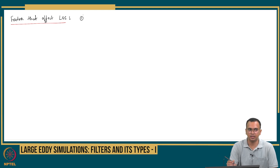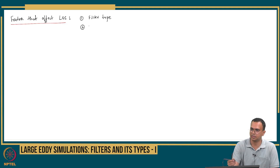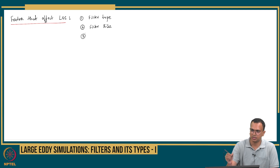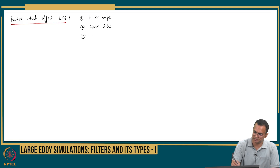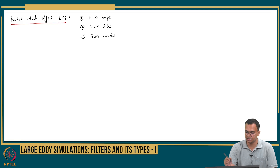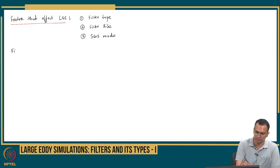The first factor is the filter type — the one you choose — and obviously the filter size, just like the grid size. The third factor is turbulence modeling. Are we modeling anything in LES? Yes, the SGS model. So the choice of filter type and choice of SGS model can give you slightly different results, and it also depends on the filter size, which is also your choice.